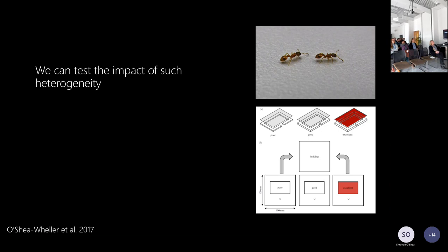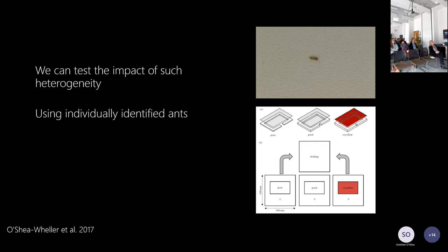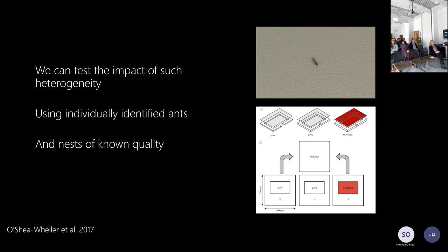That's where I employed my own experimental design to really investigate this. I individually identified many, many ants. I then produced an experimental setup with nests of varying quality. We know very well what ants like in a nest: they like it to be dark, with a small entrance, and enough room to expand. So using and manipulating these traits, I produced poor quality, good quality, and excellent quality nests, then allowed them to assess these nests and observed how long they spent assessing each one.